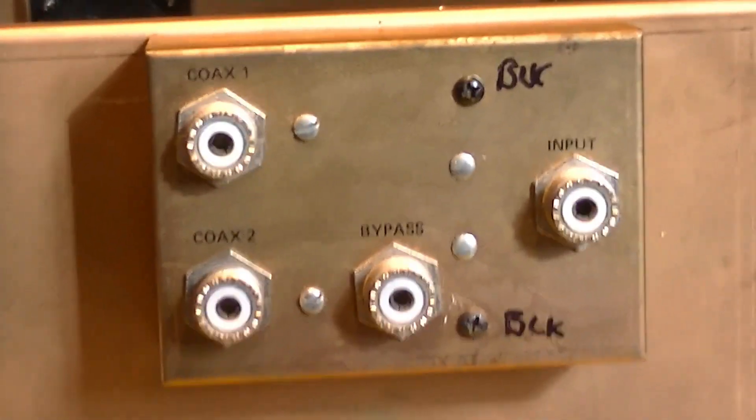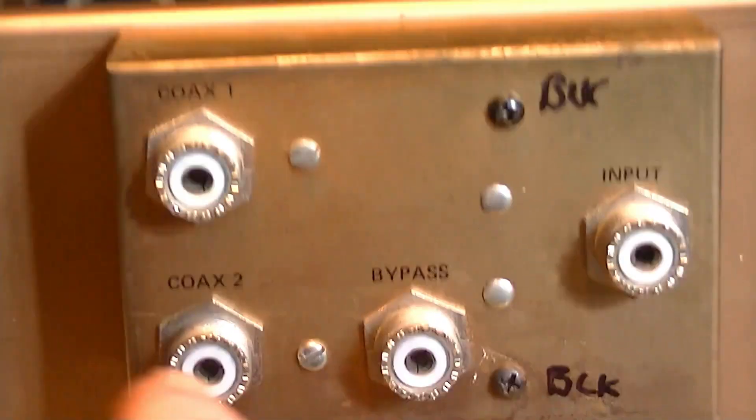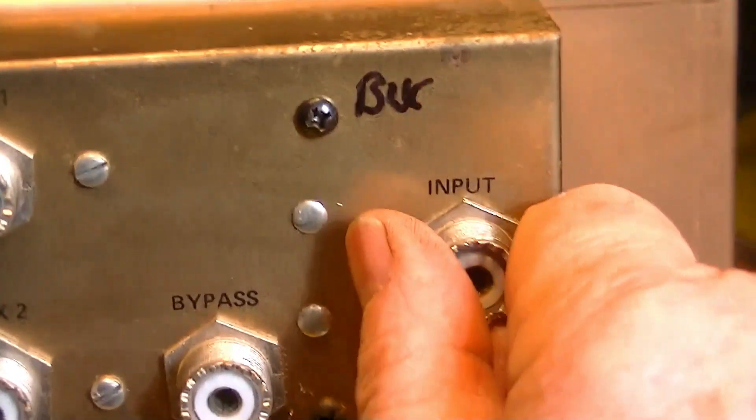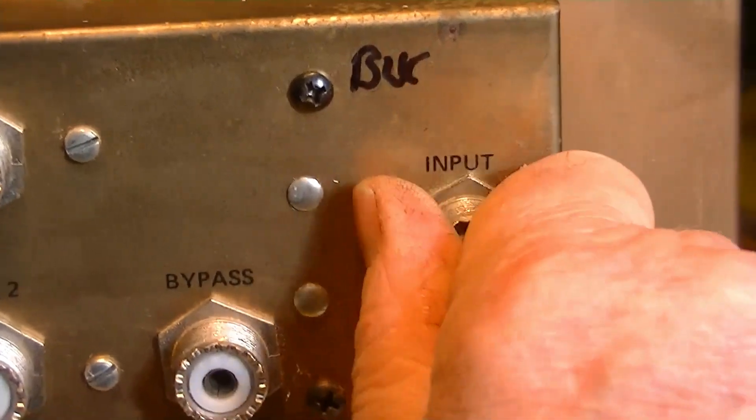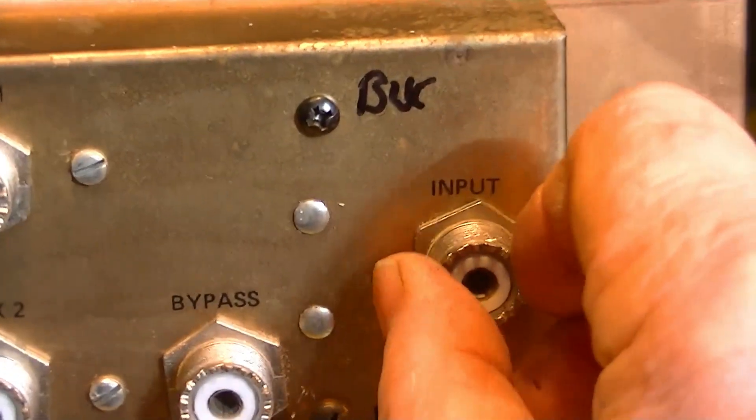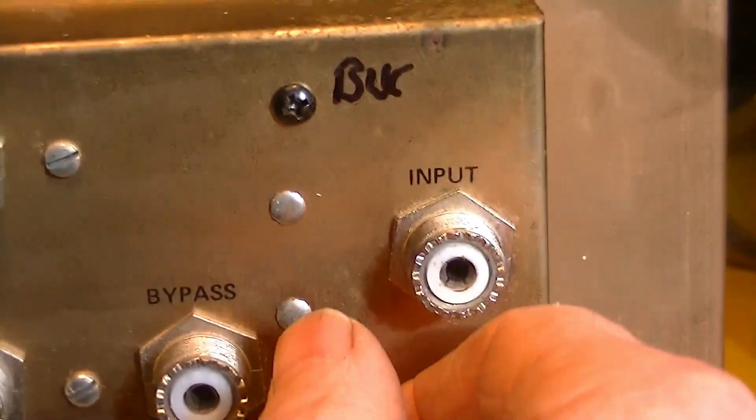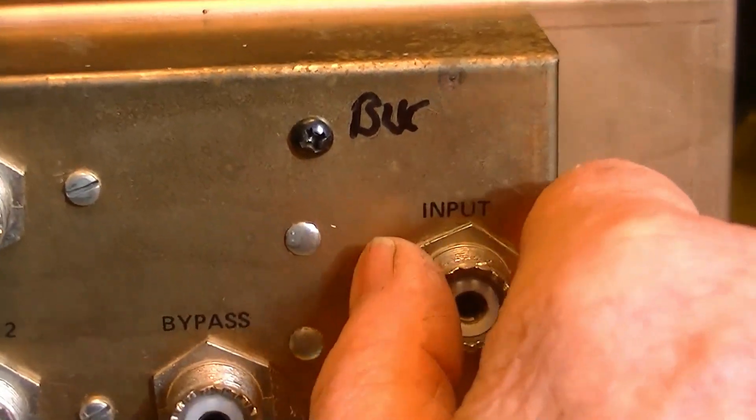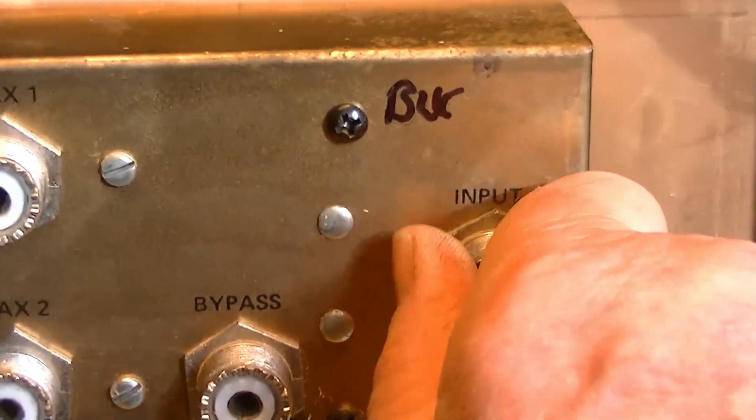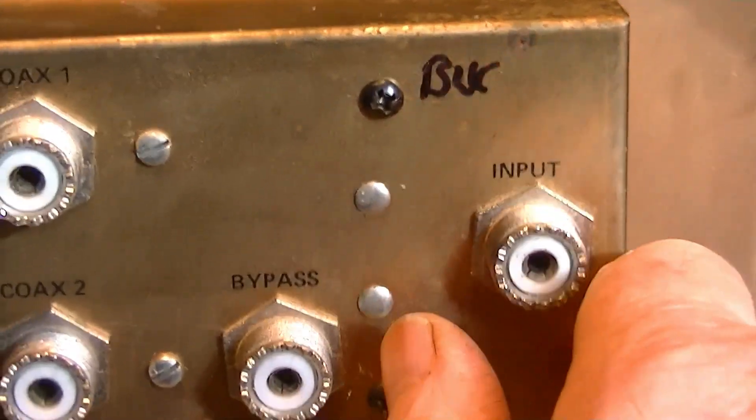And that has to do with this input connector on the back of the selector switch here. And this thing gets loose like this. Now I put a right angle connector on here and a big RG8 and I do move the antenna tuner around from time to time, which puts some stress on it.